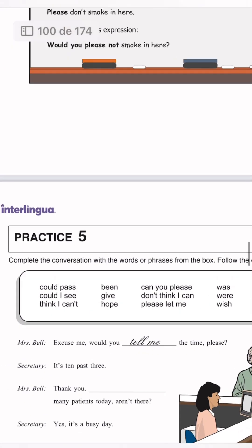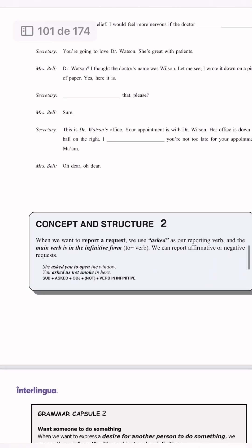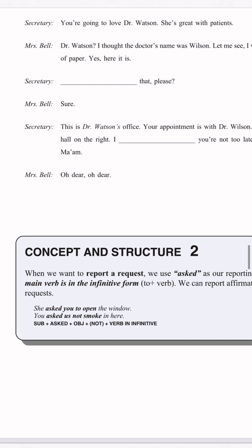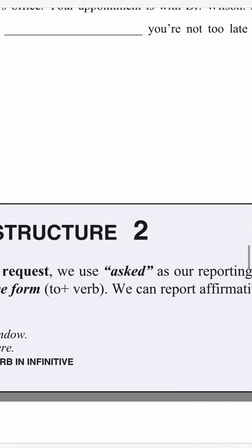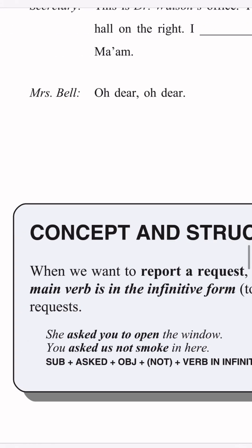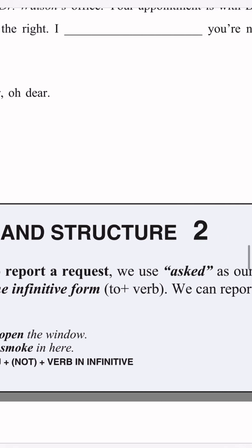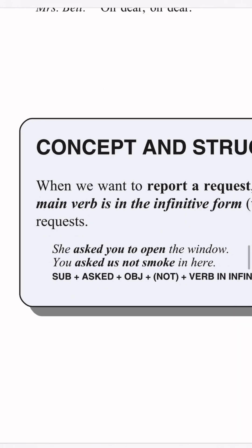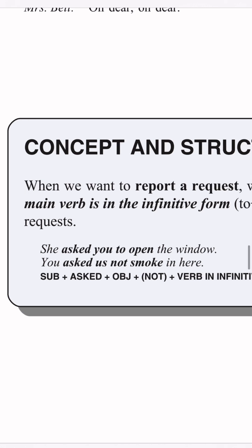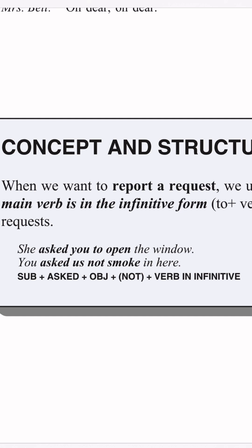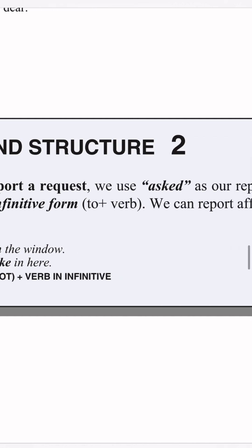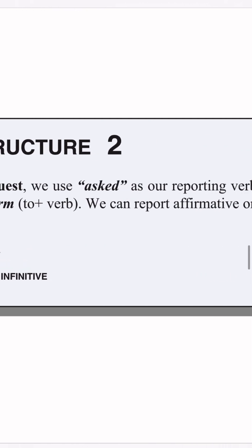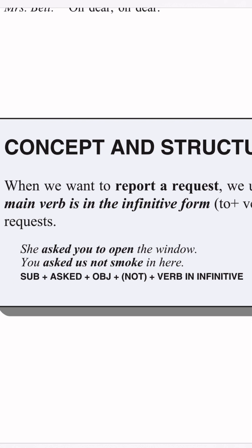This is grammar capsule number one, and we have practice number five. Concept and structure number two: when we want to report a request, we use 'asked' as our reporting verb, and the main verb is in the infinitive form. We can report affirmative or negative requests. For example: she asked you to open the window. She asked us not to smoke in here. The structure is: subject + asked + object + (not) + verb in infinitive.